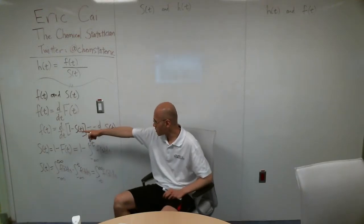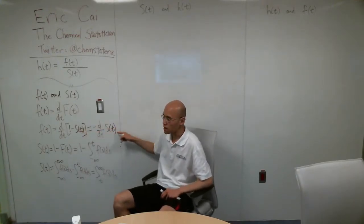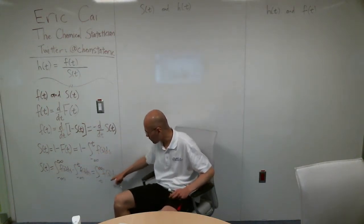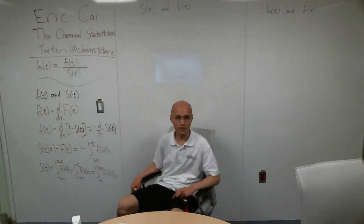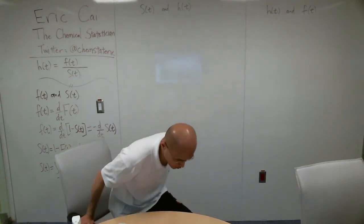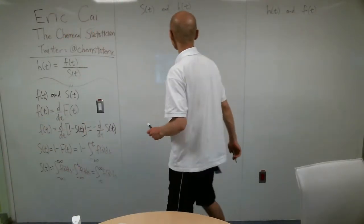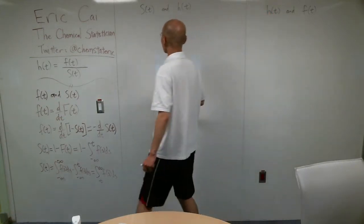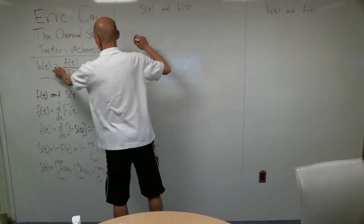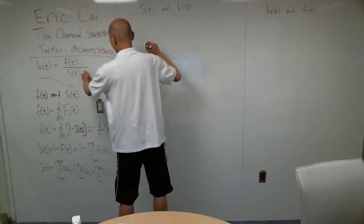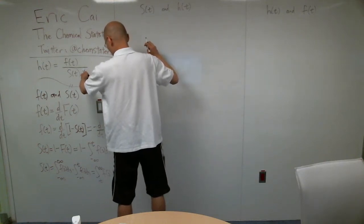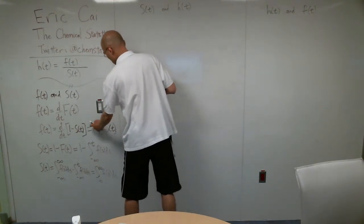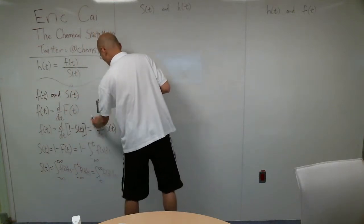So we know that f of t is equal to negative d by dt of S of t, and we know that S of t is equal to the integral of the PDF from t to positive infinity. So we know that h of t is equal to the PDF divided by the survival function, but we just learned how to write f of t as a function of S of t. So we can substitute this with this.